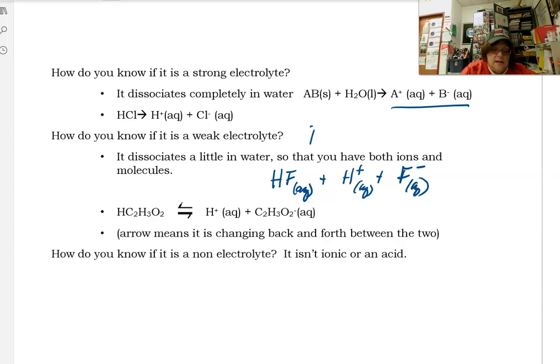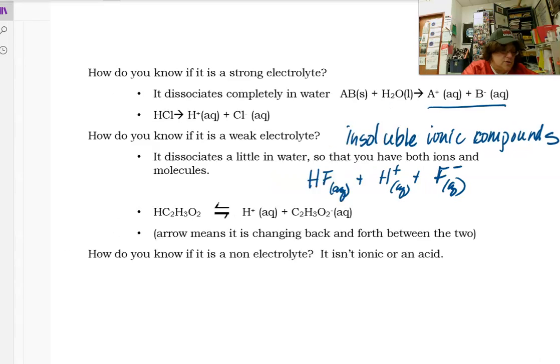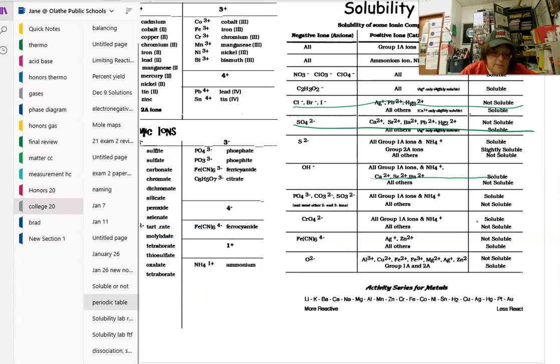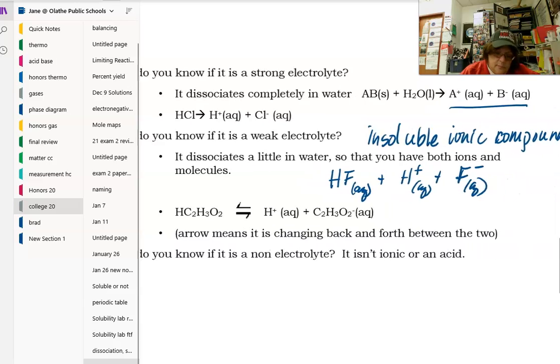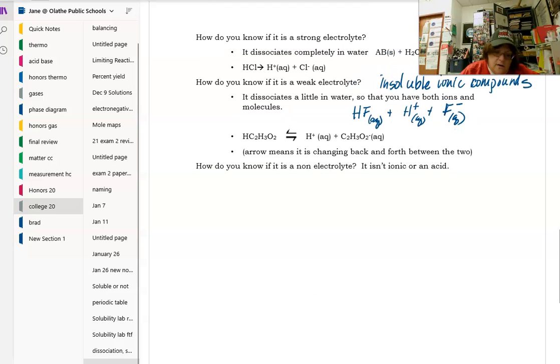Another weak electrolyte is any insoluble ionic compounds. Because solubility is a relative term, everything will dissolve a tiny bit. It's also temperature dependent, so warmer things usually dissolve faster. If you have an insoluble ionic compound, there'll be a little bit dissolving. So when you look at your solubility table, even something like phosphate that only dissolves with group 1A, those are actually going to cause the light to come on a little bit. Because there'll be a few ions, but not many. How do you know if it's a non-electrolyte? It isn't an ion or an acid.